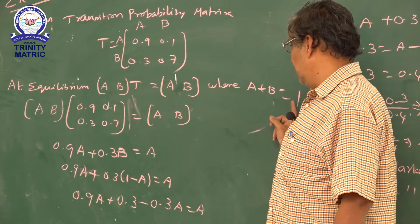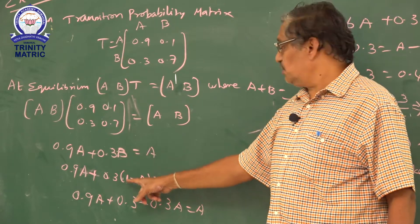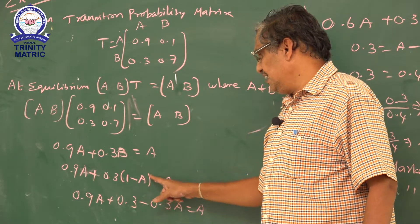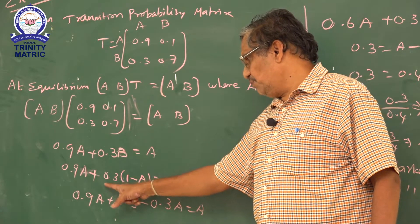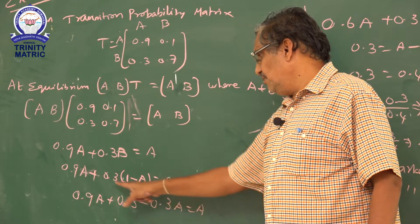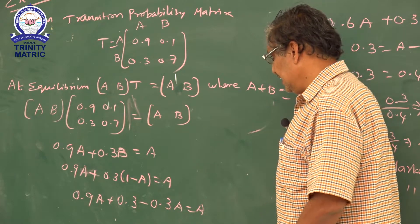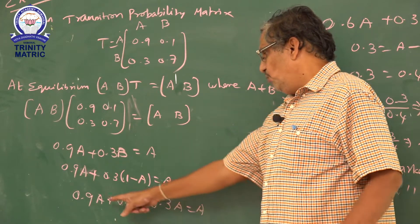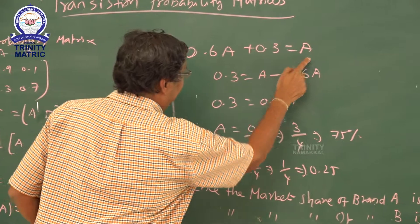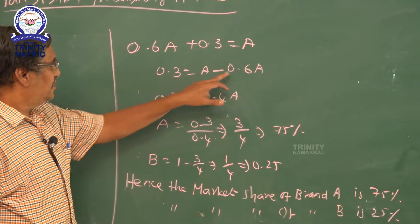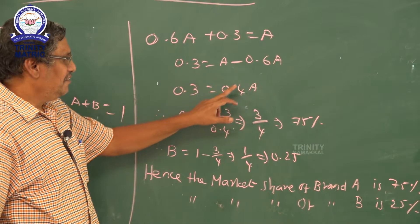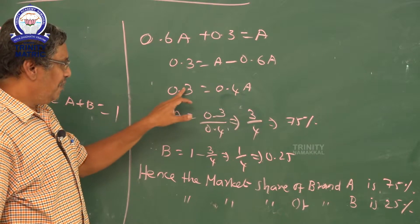We know A plus B equals 1, so B equals 1 minus A. Now 0.9A plus 0.3(1 minus A) equals A. Taking 0.3 inside and removing the bracket: 0.3 minus 0.3A. So 0.9A minus 0.3A gives 0.6A. Therefore 0.6A plus 0.3 equals A. Taking 0.6 to the other side: 0.3 equals A minus 0.6A, that is 0.4A. So A equals 0.3 divided by 0.4.